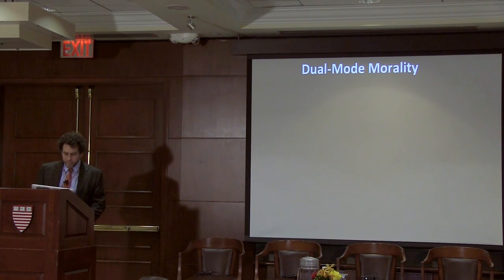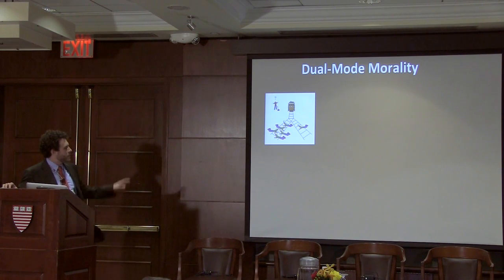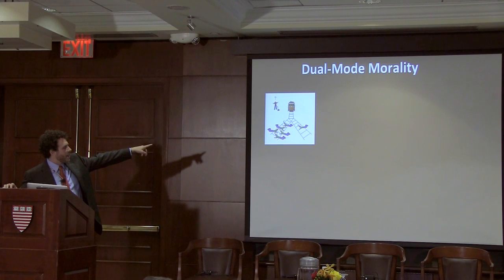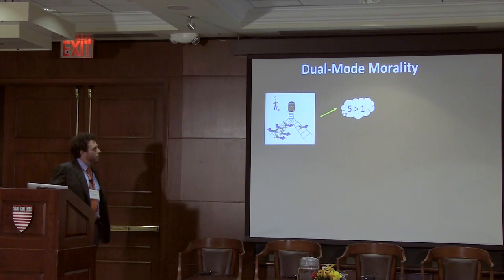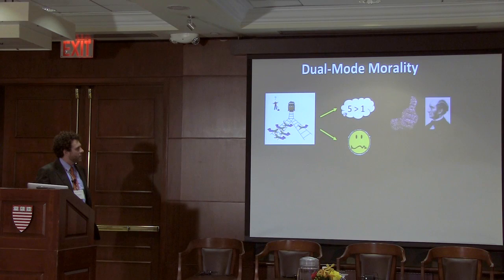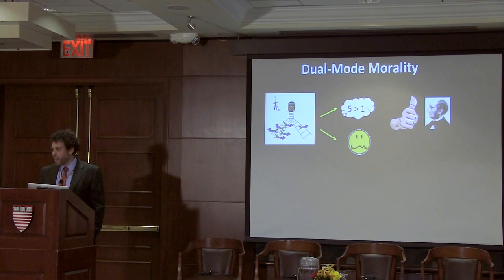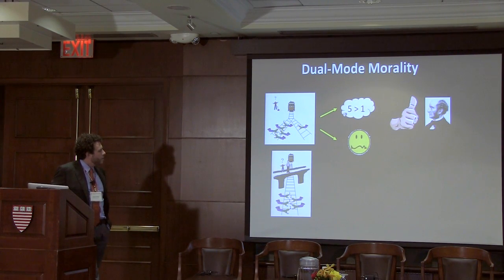How does this apply to morality? Consider the trolley problem. In the switch dilemma, you can hit a switch that will turn a trolley headed towards five people, saving them by redirecting it onto one person who will die. Your dorsolateral prefrontal cortex says five versus one — that sounds like a good deal. Not much emotional response. As a result, most people make what I'll loosely call the utilitarian response: better to save more lives, better to produce a good outcome.